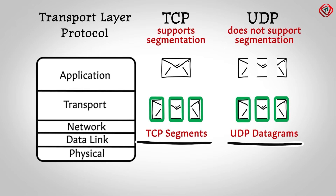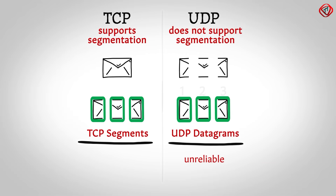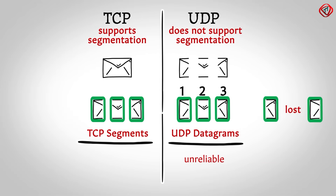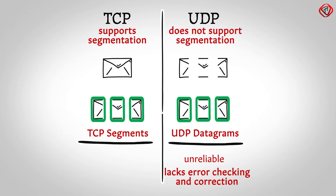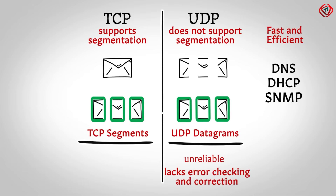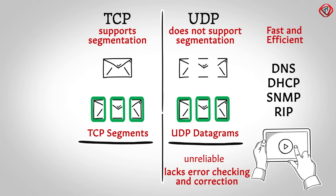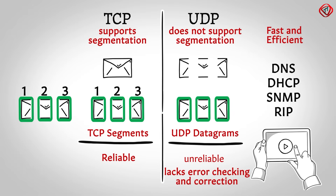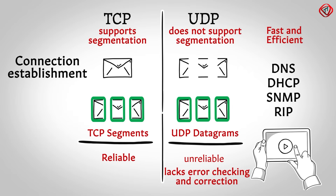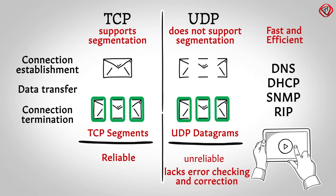UDP datagrams are considered unreliable because there is no guarantee that all datagrams sent will be received at the destination and in the correct order. So if reliability is needed, UDP should not be used. UDP lacks error checking and correction, which makes UDP fast and efficient for DNS, DHCP, SNMP, and RIP protocols. UDP is also suited for streaming videos. TCP, on the other hand, is reliable and guarantees in-order delivery of data from the sender to the receiver. The data transmission via TCP has three phases: connection establishment, data transfer, and connection termination.